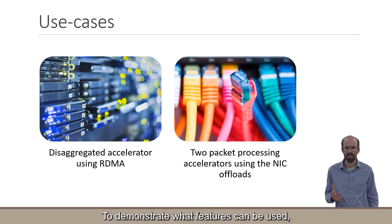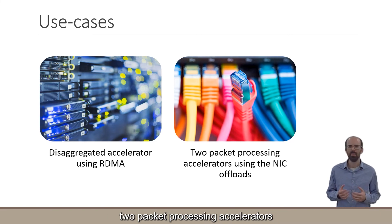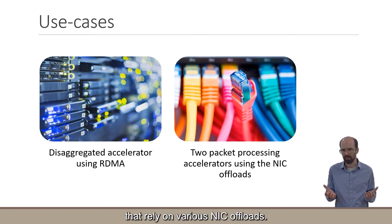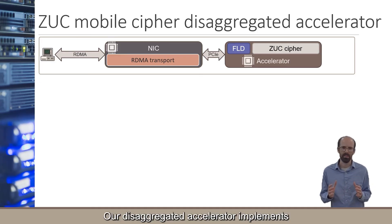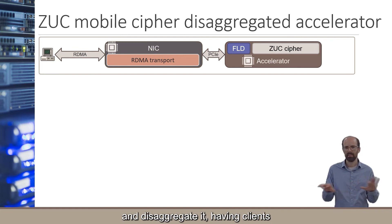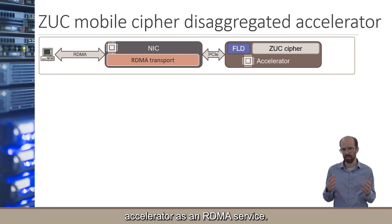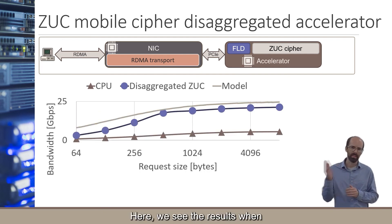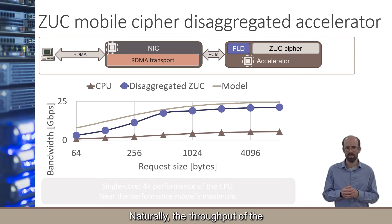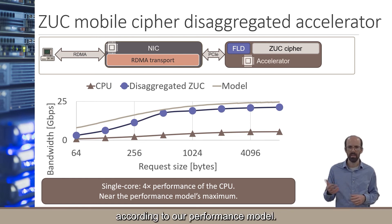To demonstrate what features can be used, we developed a disaggregated accelerator that uses RDMA for communication, and two packet processing accelerators that rely on various NIC offloads. Our disaggregated accelerator implements an offload for the ZUC algorithm, a cipher commonly used in mobile networks, with clients accessing the accelerator remotely. We rely on the NIC's RDMA implementation to expose the accelerator as an RDMA service. The throughput of the accelerator is higher than that of a single CPU core, and it nearly reaches the expected bandwidth according to our performance model.